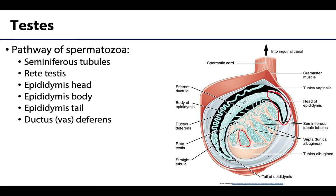Around 8 to 12 efferent ductules from the superior pole of the testis drain into and form the head of the epididymis. The epididymis lies posterior and slightly lateral to the testis and is composed of three major parts: the head, the body, and the tail. The tail of the epididymis is continuous with the ductus deferens, specifically the more proximal convoluted portion of the ductus deferens.